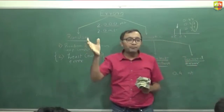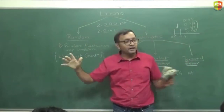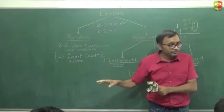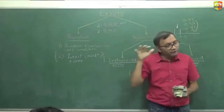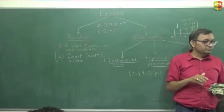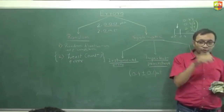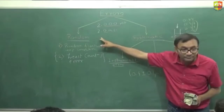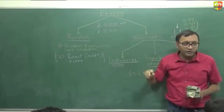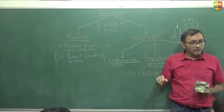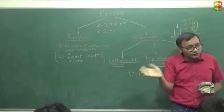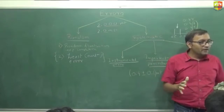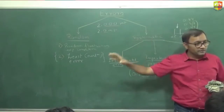The random error sometimes will be plus, sometimes will be minus. So net-net when you add up, these random errors will add up to zero. Ideally, you should take infinite readings — then you get the exact true value. The good part is it is random; the bad part is you can't remove it. Because it is random, it can be on both sides, and since it can be both sides, if you take multiple readings and add up, random error will add up to zero.